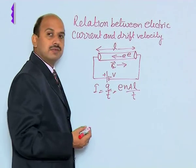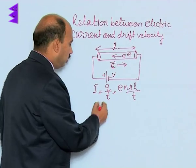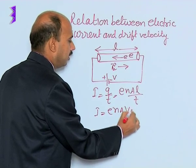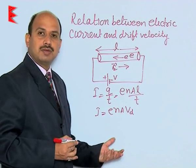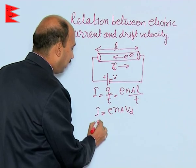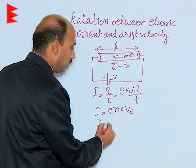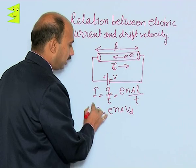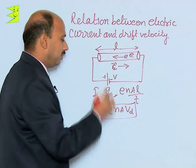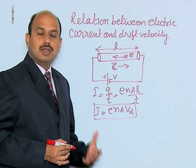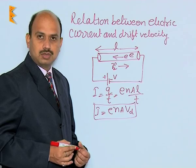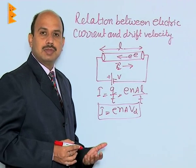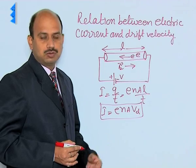Since L upon T is the average velocity, we can write I is equal to eNAV_D, where V_D is the magnitude of the drift velocity. This is the relation between electric current and drift velocity, and we have now obtained the derivation or expression for this relation.